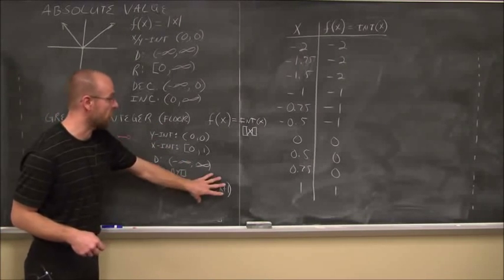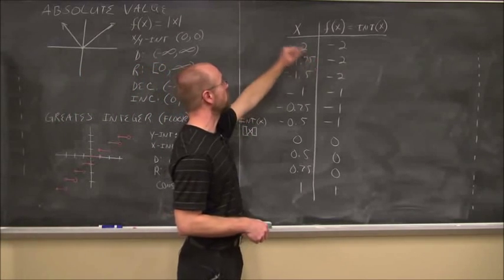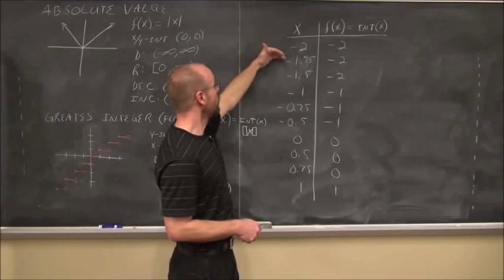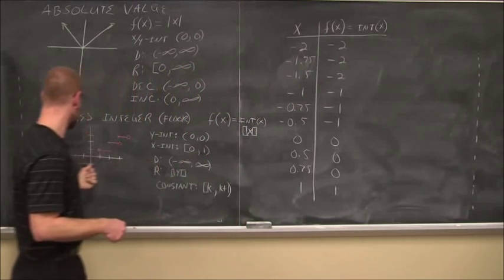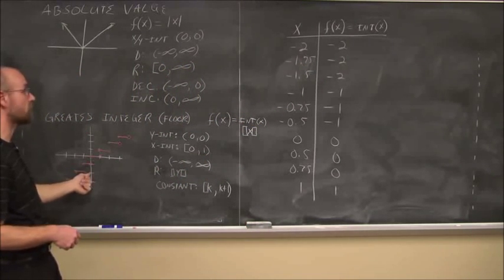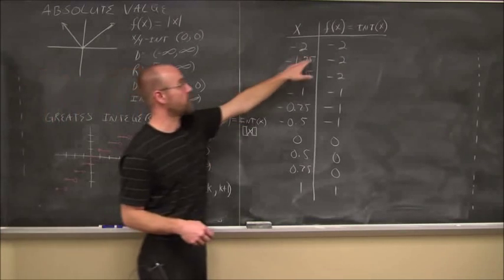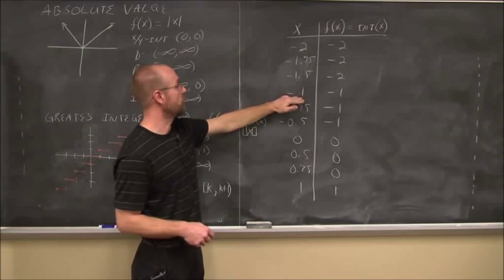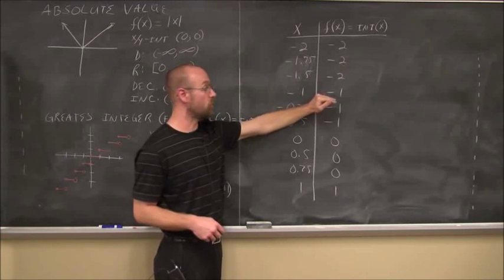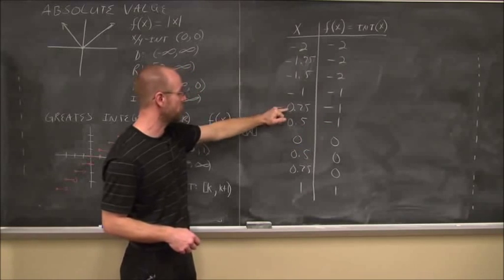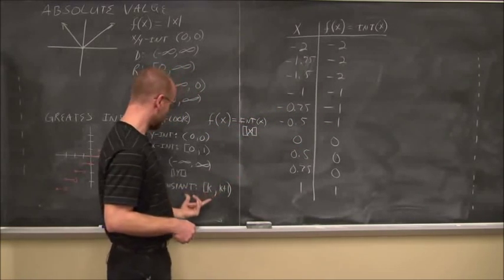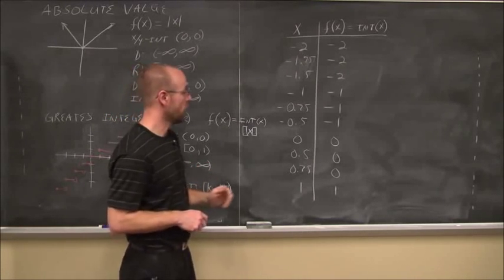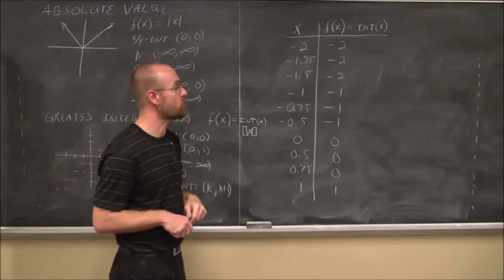Looking at a table of values: if x is −2, then y is −2. If x is −1.75, we haven't reached the next integer yet, so y is still −2. Once x reaches −1, y changes to −1 and stays constant. The values don't change until the next integer interval — constant over each interval between integers.